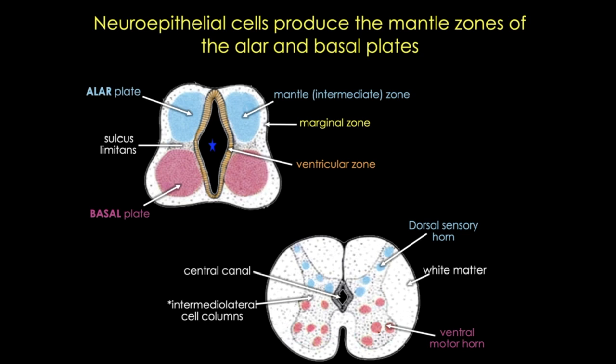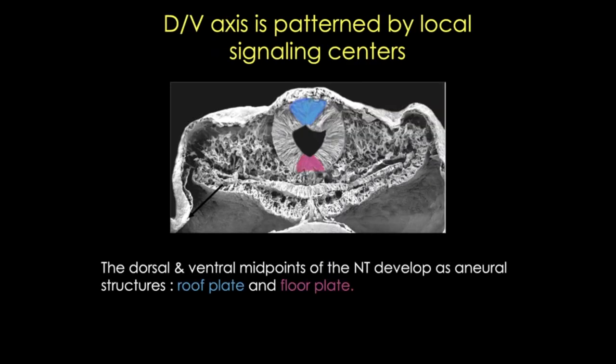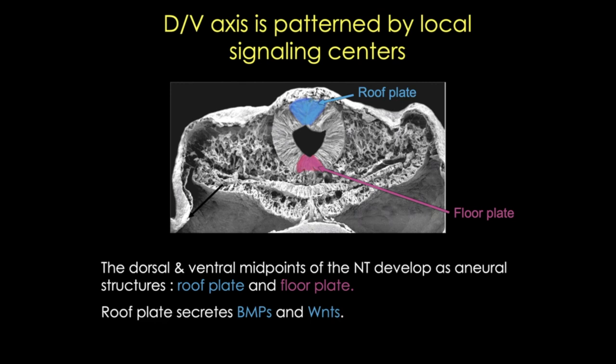Now we have a basic dorsal-ventral pattern, but how do cells know which fates to adopt? The answer is more morphogen gradients. Here in an electron micrograph of the developing neural tube, I've colored in the dorsal and ventral signaling centers: the roof plate and the floor plate. The roof plate secretes bone morphogenetic proteins (BMPs) and Wnts, while the floor plate secretes Sonic hedgehog. These three morphogens play major roles throughout embryonic development — you'll see their names repeatedly as we move through the body systems.